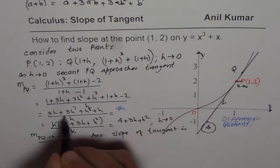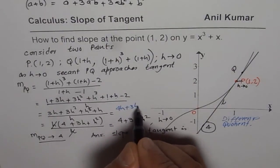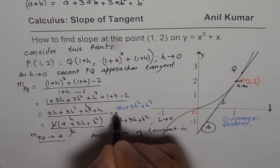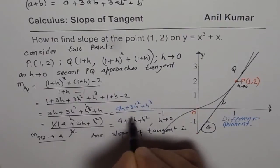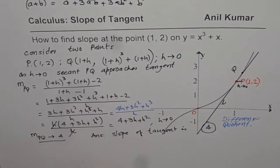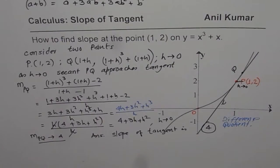To clarify: 3h plus h gave 4h, and then we had plus 3h squared plus h cubed divided by h — that is how we got 4. I hope it is absolutely clear. Try with different kinds of functions and see how to find the slope of a tangent on any curve at any given point. I hope that helps.